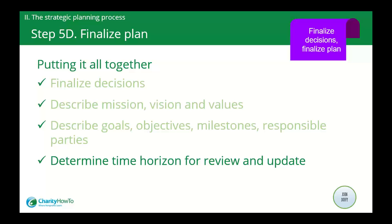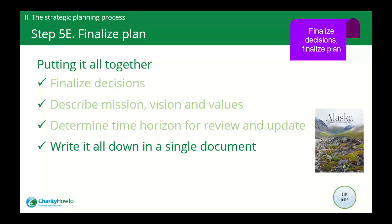Finally, determine a timeline for revisiting or revising the plan. Typical revision times are three to five years, even though the plan may be revised at any time to address major changes. Once all these decisions are made, write down the entire document. This is a way for everyone to see what was agreed upon, and it will be used for future decision making and budget development. It is important to write down the agreements because people's thoughts and memories have a tendency to change over time, so it is critical to have these things memorialized in a single document.